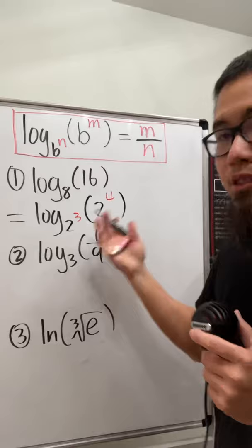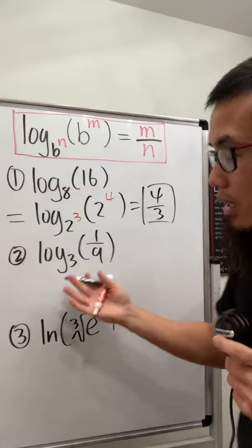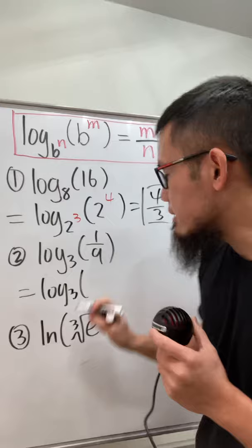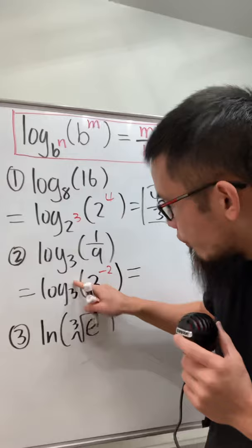For the second one, we have log base 3 and the input is 1 over 9, which is the same as 3 to the negative 2 power, and the answer is just negative 2 over 1, which is still just negative 2.